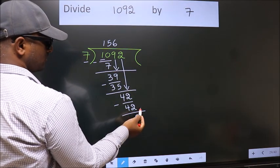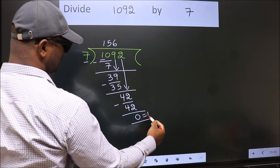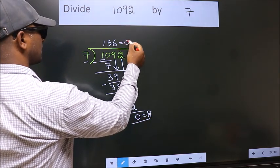No more numbers to bring down. So we stop here. This is our remainder. This is our quotient.